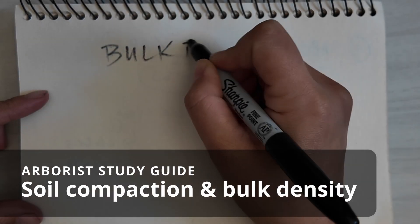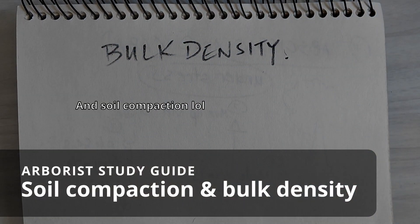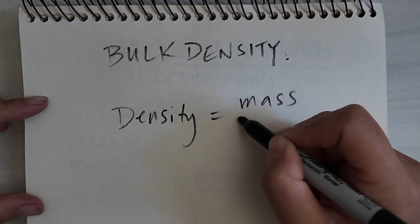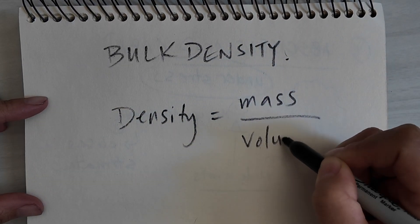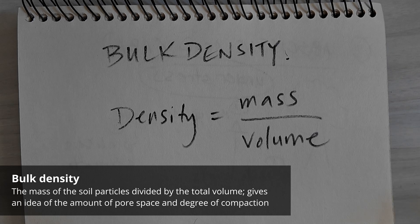This video is about bulk density, which is one of the physical properties of a soil. Density is calculated as mass over volume, so the bulk density of the soil is determined by weighing a soil sample that's completely dry and dividing that mass by the volume of the sample.